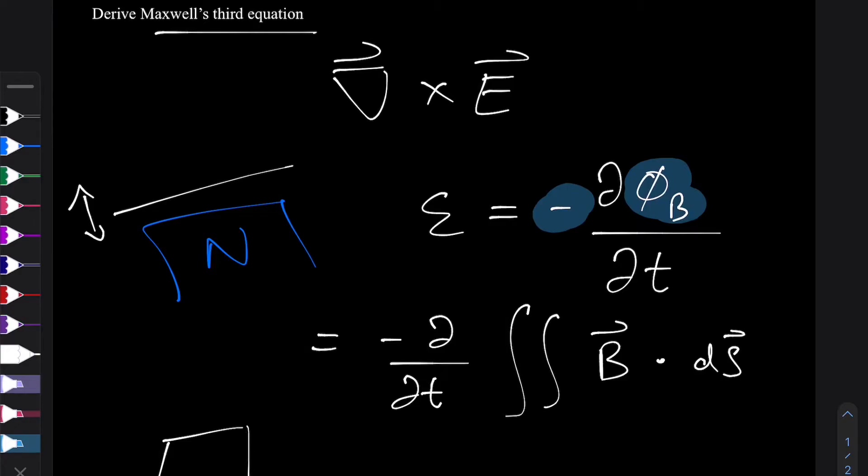It could be a square, it could be a cylinder, it could be a sphere, it could be any surface. It doesn't have to be closed or open.